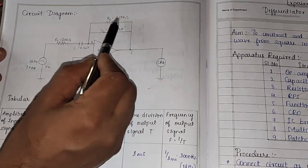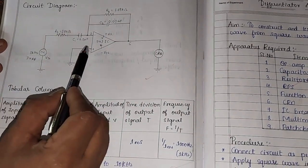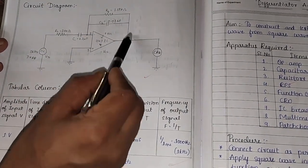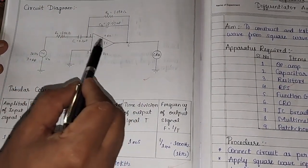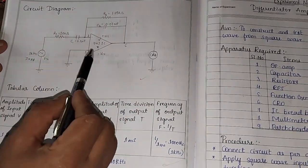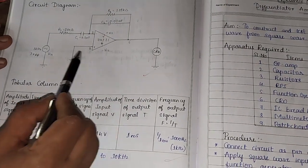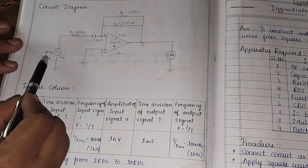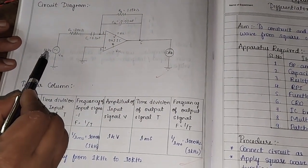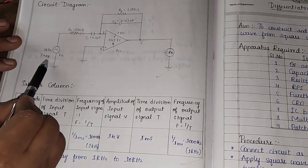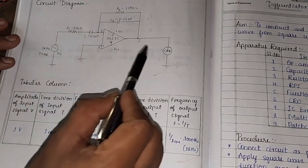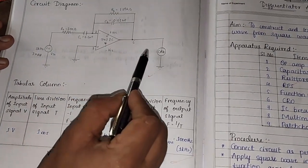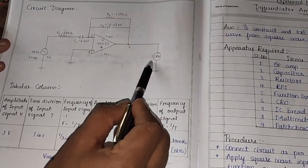Once we connect the resistors and capacitor in this fashion, this circuit works as a differentiator. At pin number 2, we have to apply the input with the help of a function generator. And at pin number 6, we have to observe the output.